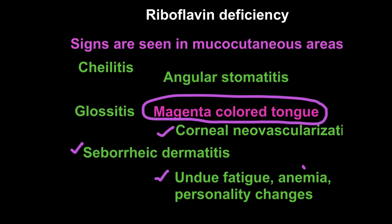Patients with riboflavin deficiency may have undue fatigue due to decreased electron transport chain activity and iron deficiency leading to anemia. The type of anemia seen in riboflavin deficiency is normocytic normochromic anemia. Some patients can also have personality changes. To review: the signs are chelitis, angular stomatitis, magenta colored tongue (glossitis), corneal neovascularization, seborrheic dermatitis, undue fatigue, anemia, and personality changes.